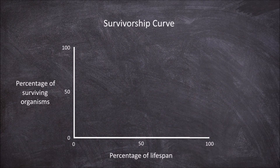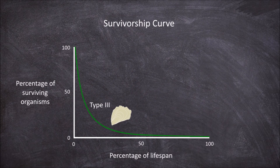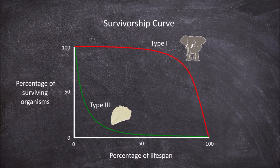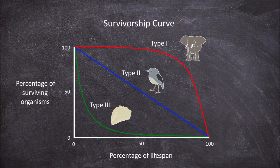Strict R selected species such as the oyster show a type 3 survivorship curve, where the number of individuals surviving decreases rapidly and leaves only a few remaining to the end of their lifespan. Strict K selected species such as elephants show a type 1 survivorship curve, where most survive into adulthood and until the end of their lifespan. Those in between, such as many songbirds, show a type 2 survivorship curve with a more steady and linear level of decline of survivorship over their potential lifespan.